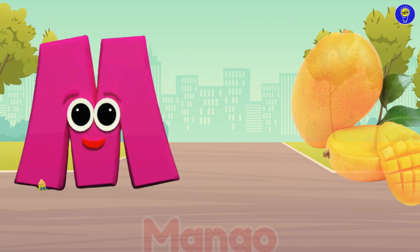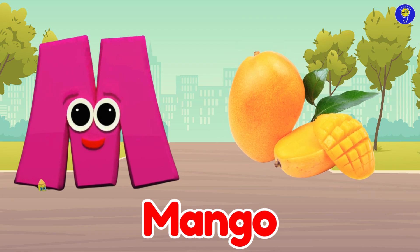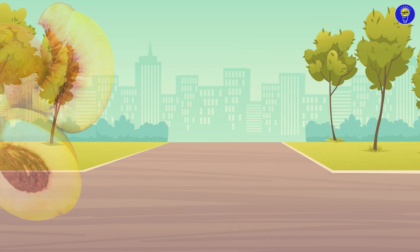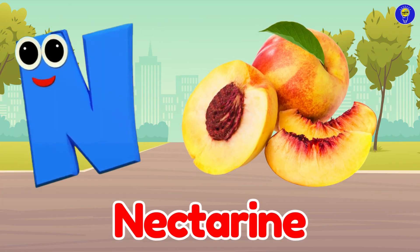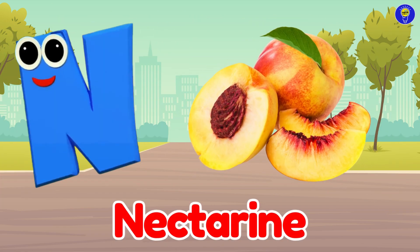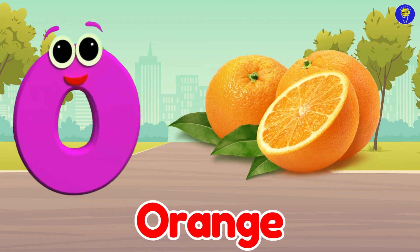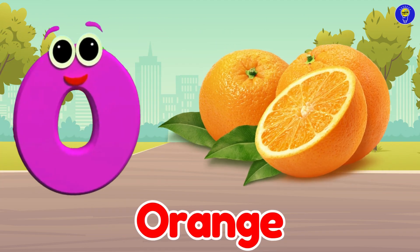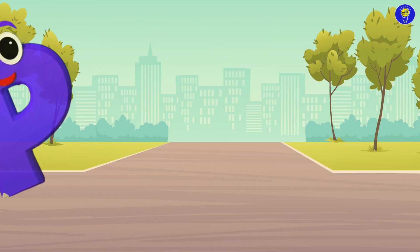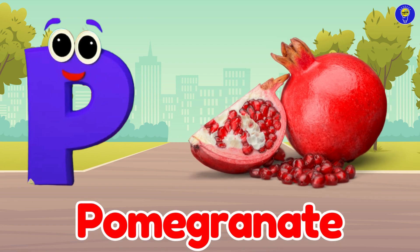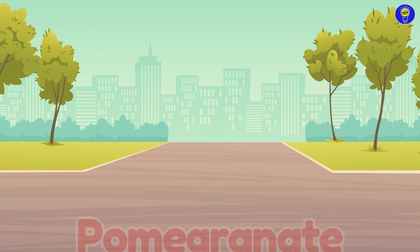M is for mango. Ma, ma, mango. N is for nectarine. Nuh, nuh, nectarine. O is for orange. O, o, orange. P is for pomegranate. Puh, puh, pomegranate.